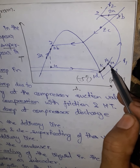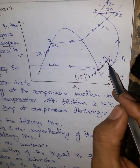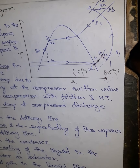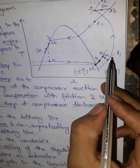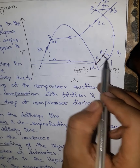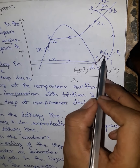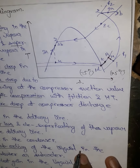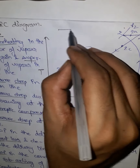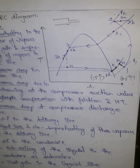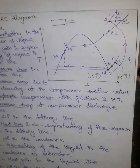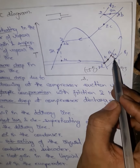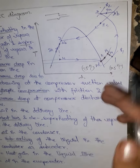From 1b to 1a, there is a pressure drop in the suction line because the refrigerant is being supplied from the evaporator to the compressor. From 1a to 1, there is a further pressure drop due to the bore drawing at the compressor suction valve. This happens because at the inlet of the compressor, there is a sudden change in the diameter of the pipeline, causing pressure losses — similar to sudden contraction or expansion losses in fluid mechanics.